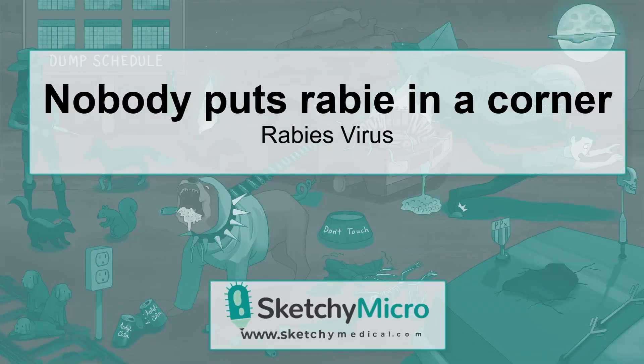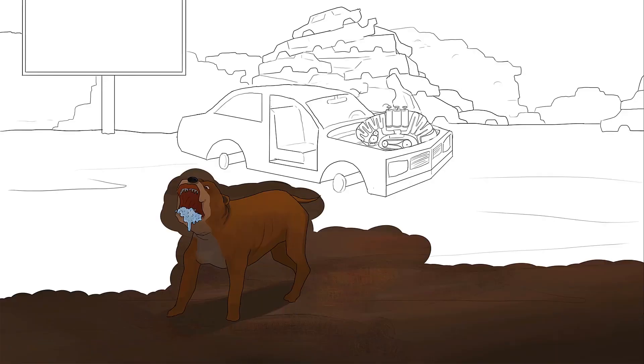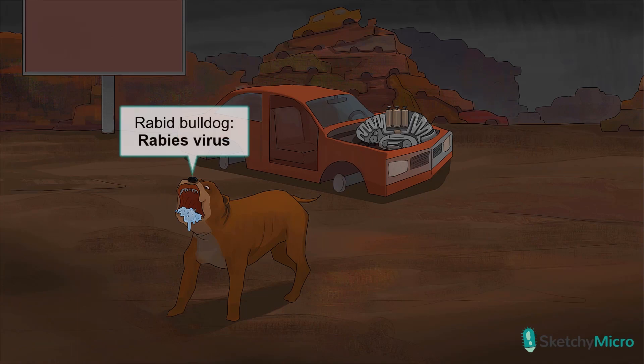Today, we're going to introduce you to rhabdovirus, which causes rabies. Our story will feature a junkyard dog who has come down with a case of rabies. Front and center is our rabid junkyard bulldog complete with an underbite and jowls, and he's foaming at the mouth. That's because he's representing rabies virus, a member of the rhabdoviridae family.